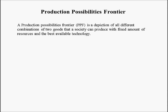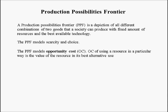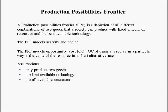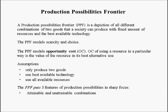This is a model that applies in the short run. The PPF models scarcity and choice, and it models opportunity cost. The opportunity cost of using a resource in a particular way is the value of that resource in its best alternative use. Assumptions: the economy only produces two goods, actors use the best available technology, and they use all available resources. The PPF puts three features into sharp focus: attainable and unattainable combinations, efficient and inefficient production, allocative efficiency, and trade-offs and free lunches.